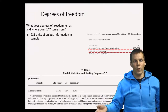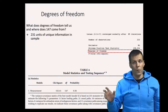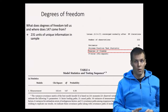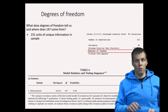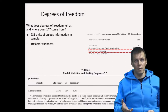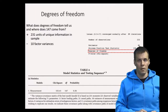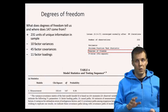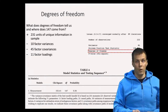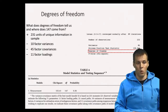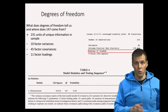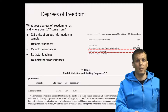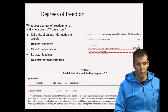Let's do the degrees of freedom calculation. We start with 231 unique elements of information from the correlation matrix of all indicators. Then we subtract what we estimate: 10 factor variances, 45 factor covariances (10 variables have 45 unique correlations), 11 factor loadings (we had 21 indicators, 10 are used for scaling the factor, leaving 11 to estimate), and 18 indicator error variances (21 indicators minus 3 single-indicator factors with error variance fixed to zero). That gives 147 degrees of freedom.